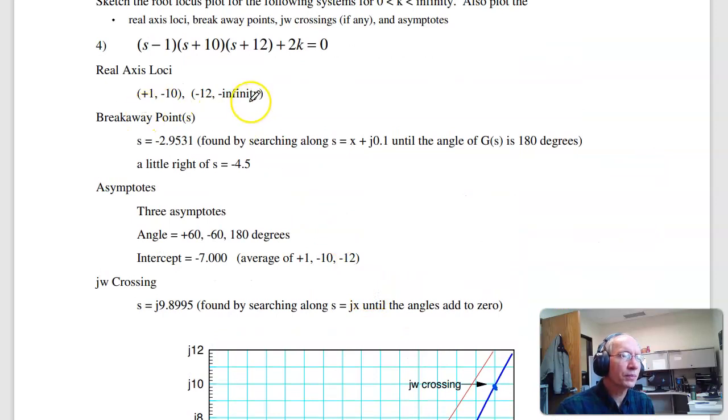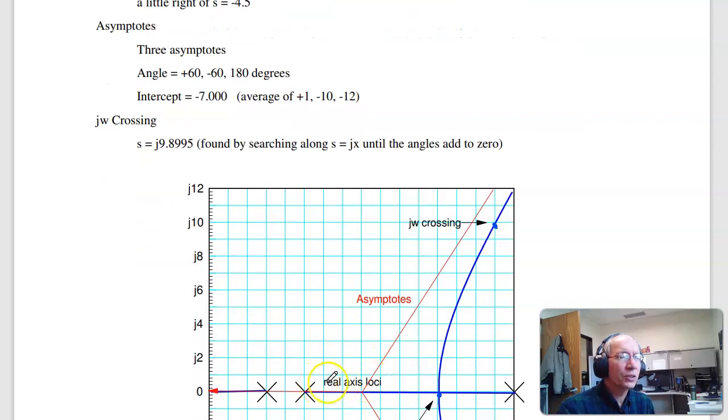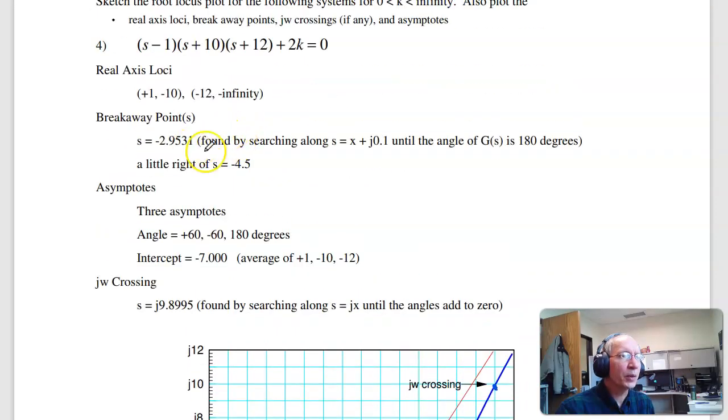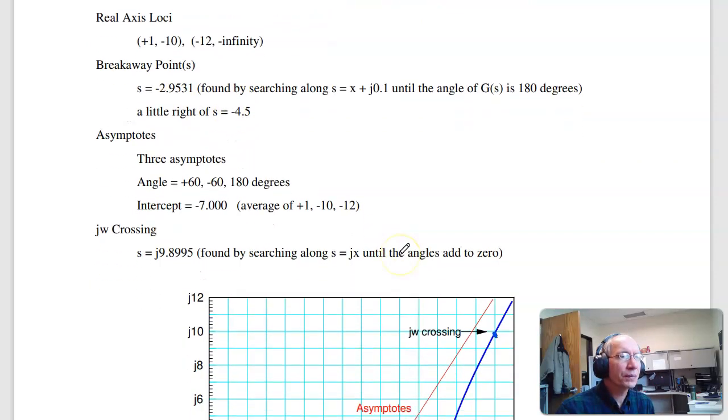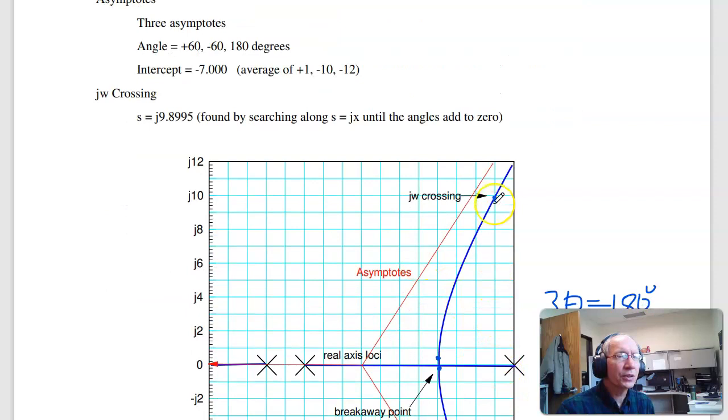For the numbers, those actual numbers - the breakaway point on test, you can just approximate it. The midpoint pushed right a little bit. Here it just kind of showed off. If I search along the line x plus j.1 until the angles add up to 180, I find this point, which is basically the breakaway point, minus 2.9531. To find the j omega crossing, I do a search. Search up and down until the angles add up to 180. And it's actually j 9.8995.